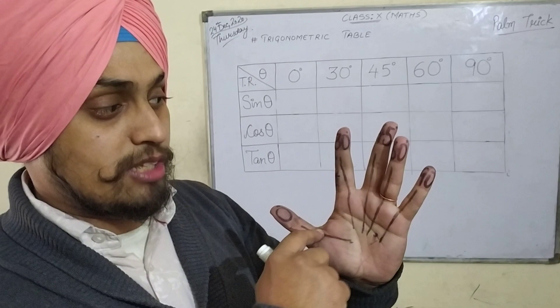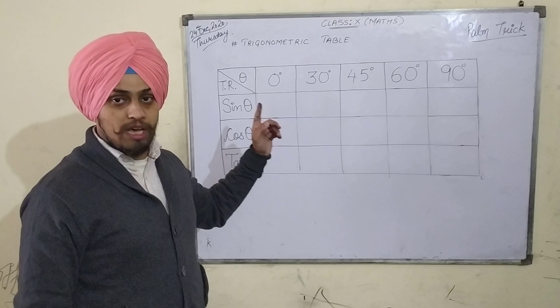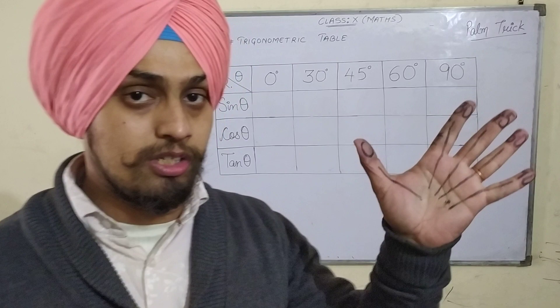So I can find the values of sin 0 degree, sin 30 degree, sin 45 degree, sin 60 degree, and sin 90 degree with the help of this palm trick. Let me show you how this trick is going to work. First of all we will find the values of sin theta for 0 degree, 30 degree, 45, 60, and 90 degree.